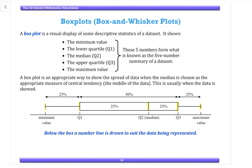A box plot is an appropriate way to show the spread of data when the median is chosen as the appropriate measure of central tendency or the middle of data. This is usually when the data is skewed. We know the median is the middle of our data, so 50% of our data is below the median and 50% is above. We've split our data into sections with 50% of our data in that box, and then we have 25% on either end.